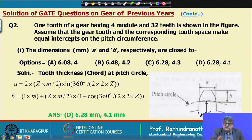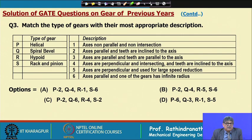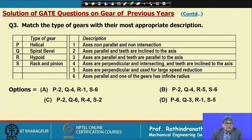The correct answer is 6.28 millimeter (option D) and 4.1 millimeter. The next question is a match-the-type question: match the gears with their most appropriate descriptions. Column P is helical gear, Q is spiral bevel, R is hypoid gear, and S is rack and pinion.